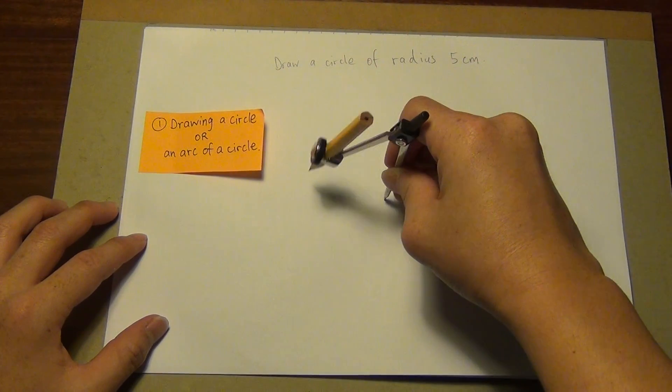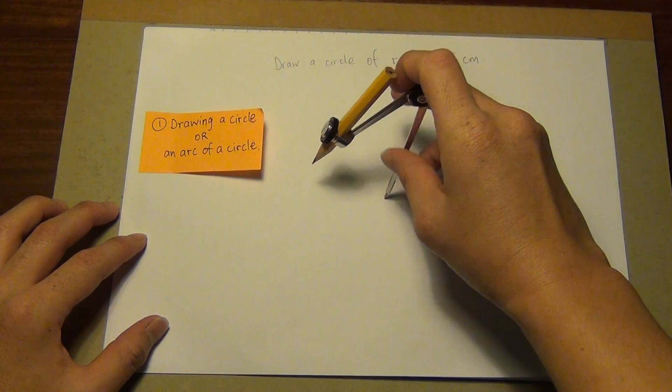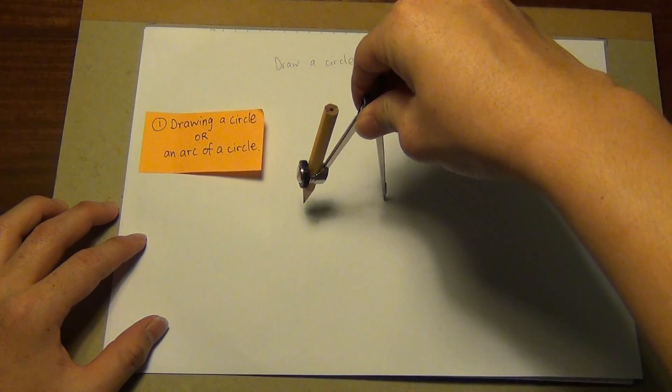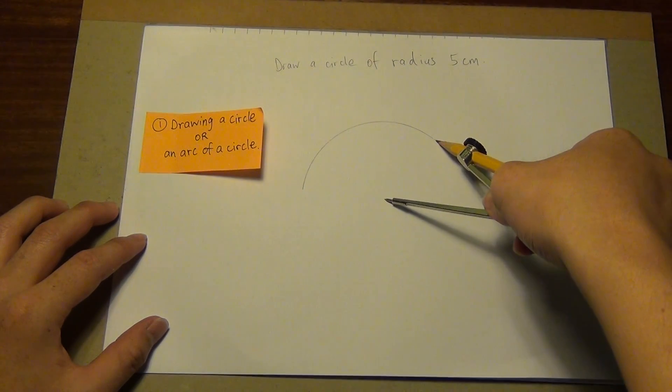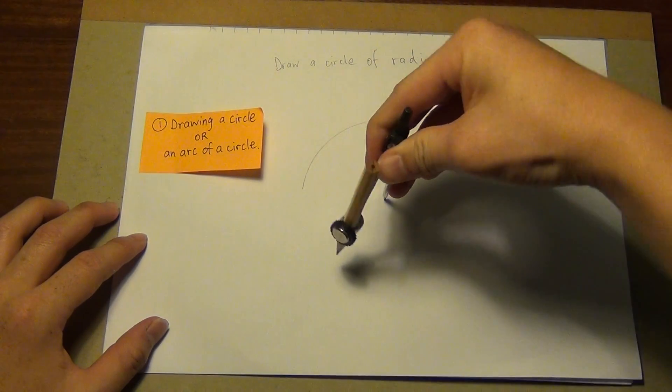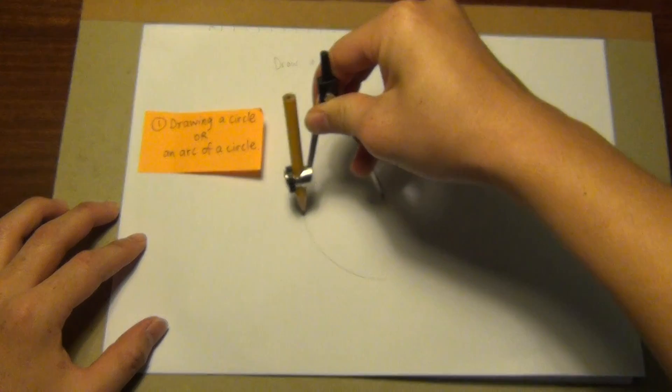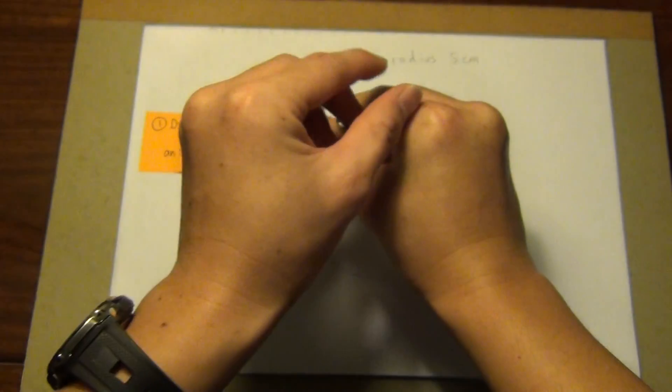Take it as 5cm. I will put the pointer end first, then hold on to the hinge and make a beautiful arc with a twist motion. You can start from anywhere you like. You will get a complete circle after this.